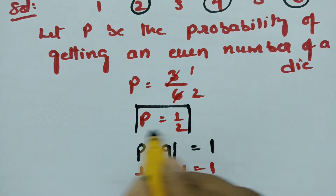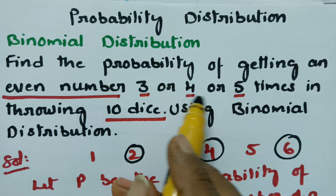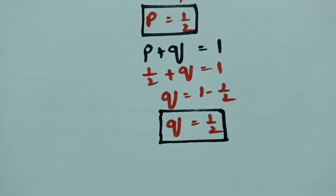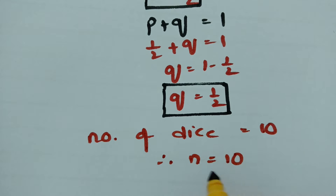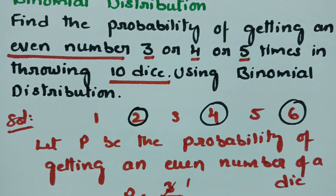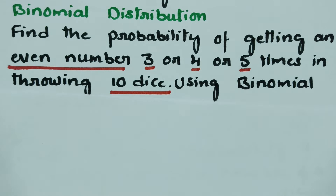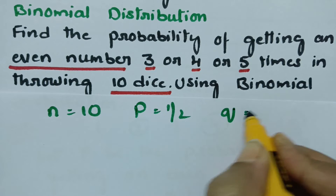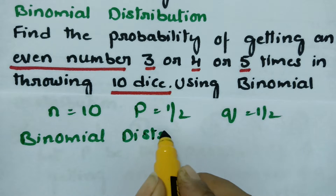The probability of getting an even number is 1/2 and the probability of not getting an even number is also 1/2. We are throwing 10 dice, therefore n is equal to 10. We need to find the probability for three times, four times, or five times using the binomial distribution formula.